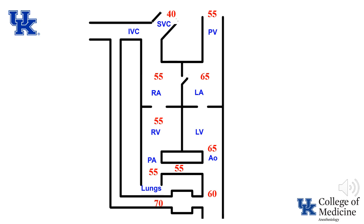The blood with a saturation of 65% from the left atrium enters the left ventricle and is pumped into the aorta, where it preferentially perfuses the brain. In contrast, blood from the right ventricle with a saturation of 55% is pumped into the pulmonary artery, and the majority of it flows through the ductus arteriosus to enter the aorta, resulting in a saturation of 60% distal to the junction of the ductus arteriosus with the aorta.